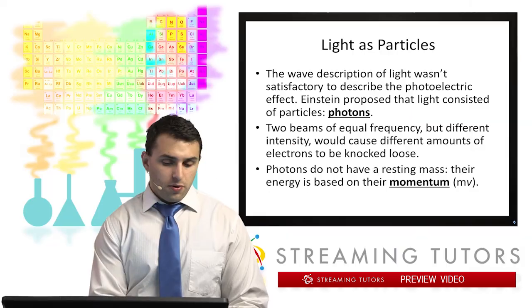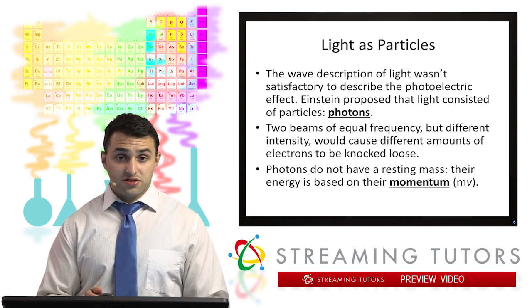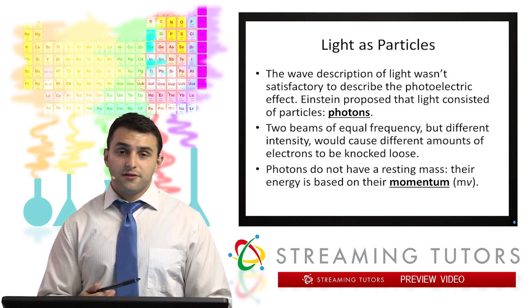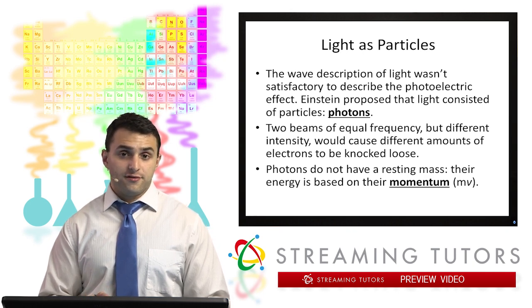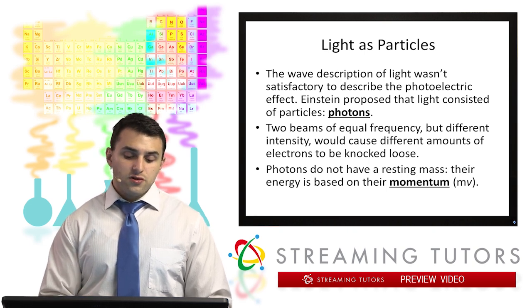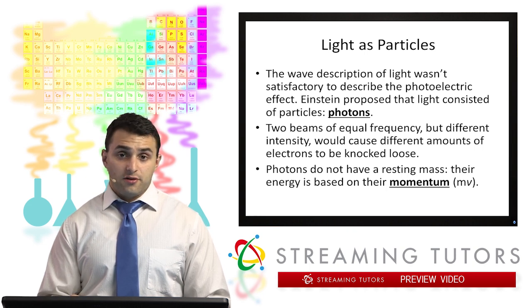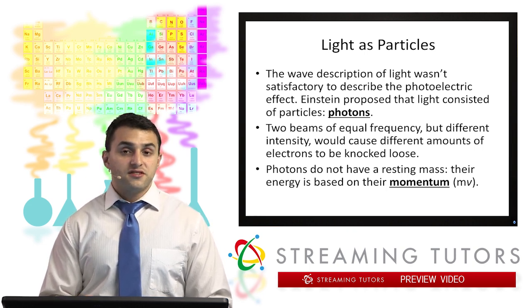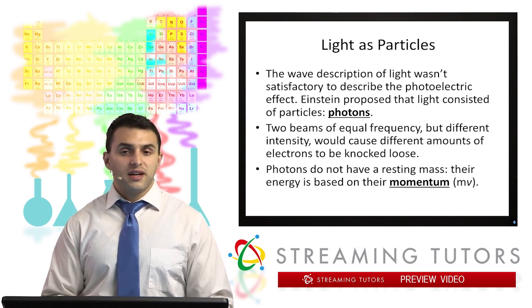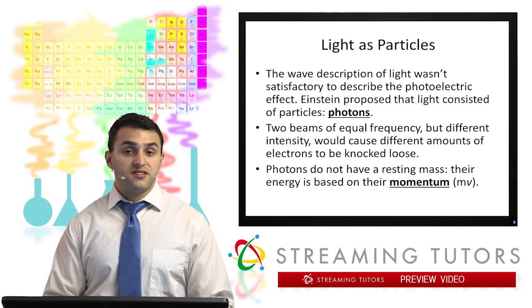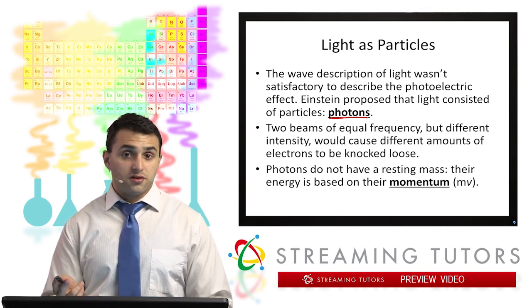Now, the one important thing and the thing that Einstein discovered or postulated, I should say, that won him the Nobel Prize was the fact that the photoelectric effect can't really be explained by having light acting as a wave. Because what happened is, given two beams of equal frequency but different intensity, different amounts of electrons would be knocked out. But if they have the same frequency, that would mean they have the same energy too. So that doesn't make any sense. So something else had to be there. And what Einstein postulated was the existence of this particle called photons. Photons are literally particles of light.